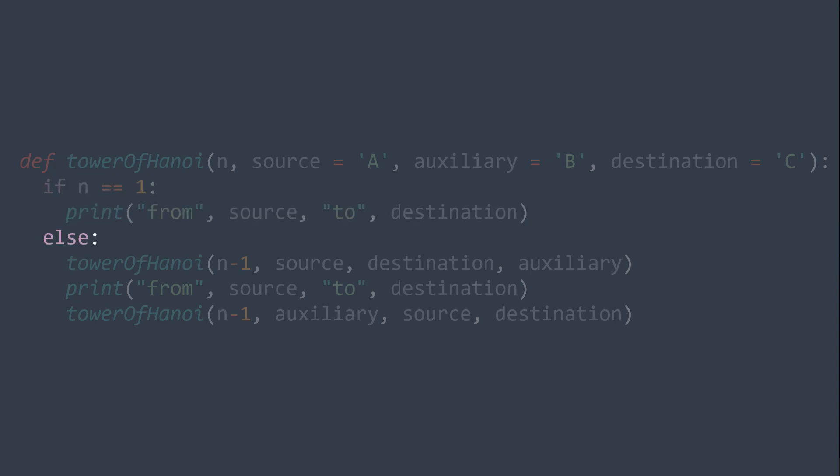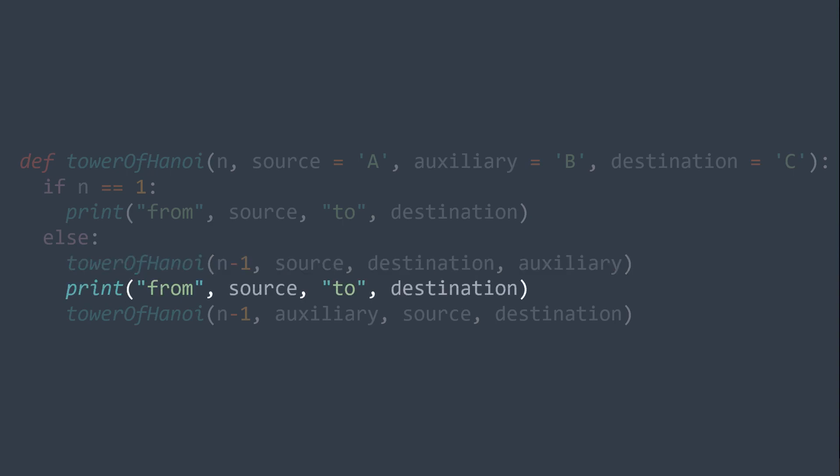Else, we want to move N-1 disks from source to auxiliary, so we call the function again with N-1, and the source is still the source, but we switch between auxiliary and destination, because now the destination is the auxiliary. For example, we were taking those disks from A to B and not to C. After it, we set that we move 1 disk from source to destination, so we print: we move from source to destination.